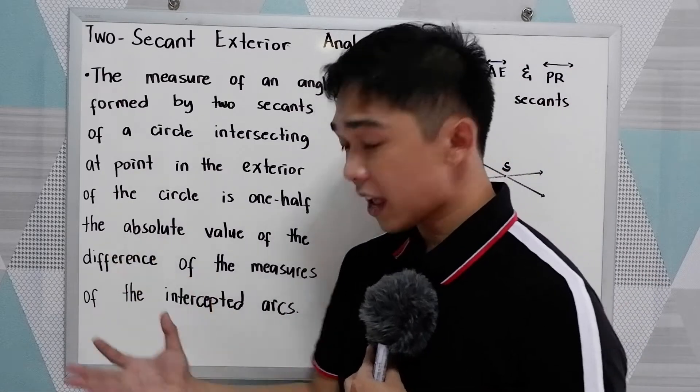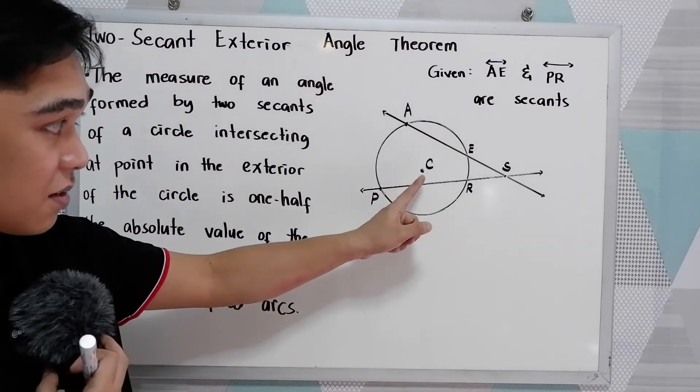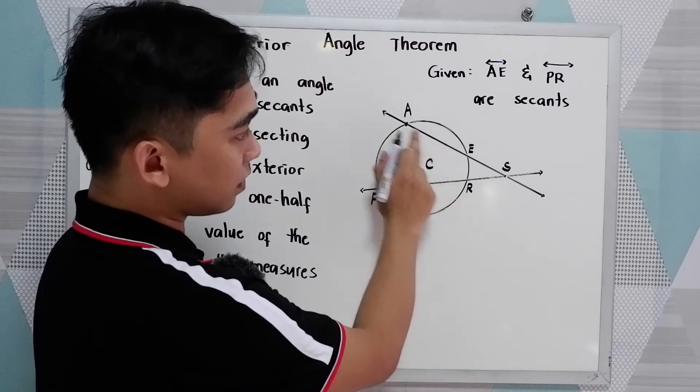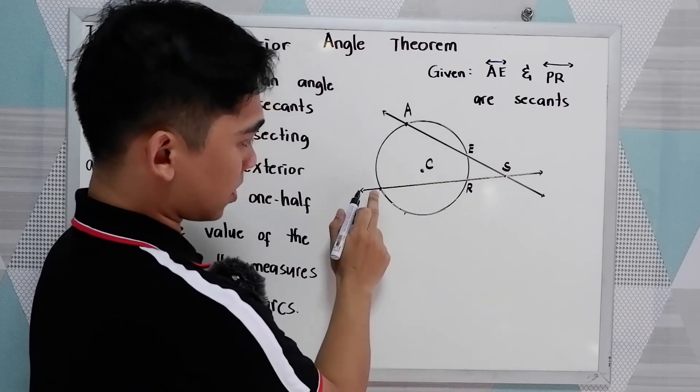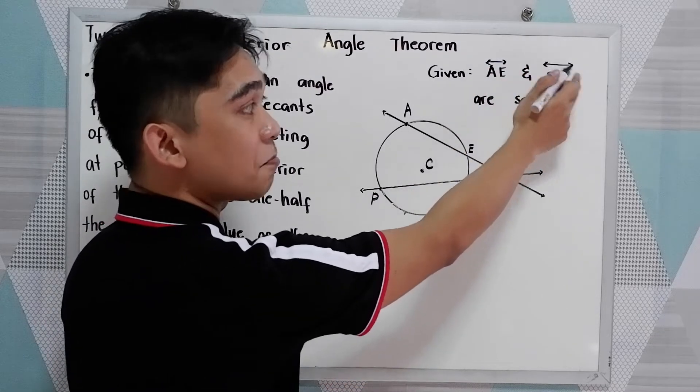To better understand the theorem, let's have this circle which is circle C, and given we have AE and secant PR. AE and line PR are secants.